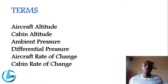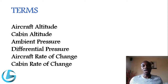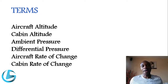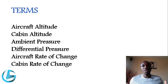We'll look at the major terms found in a pressurization system. The first term is aircraft altitude — the level at which the aircraft is flying relative to sea level. It is the altitude where the aircraft is physically flying.